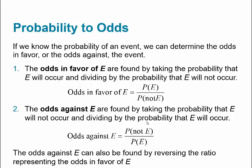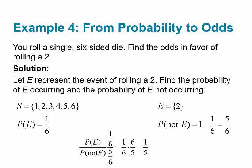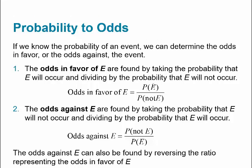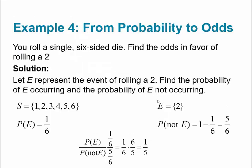For example, you roll a single six-sided die. Find the odds in favor of rolling a 2. Let E be the event of rolling a 2. The probability of E occurring is 1/6, and the probability of E not occurring is 5/6. So the odds in favor = P(E) / P(not E) = (1/6) / (5/6). The 6s cancel, giving odds in favor of 1 to 5.